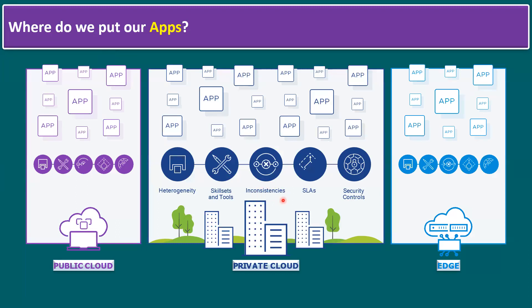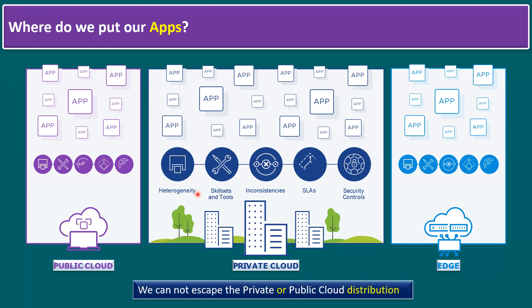There may also be some inconsistency, and the team must have the required skill set and tools. The infrastructure must be supported for heterogeneity. To support heterogeneity, most applications are being migrated to container applications with microservices architecture. That is a common challenge, and to address this, we should be aware that we cannot escape private or public cloud distribution for our customer applications.